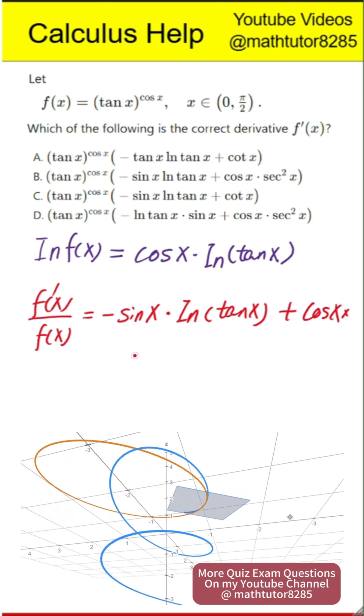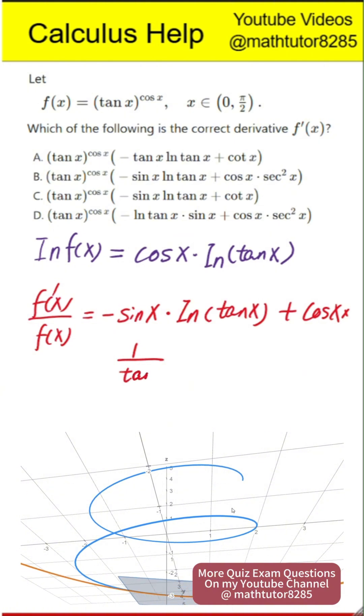Then, from the product rule, we also add cosine x times the derivative of natural log of tangent x.